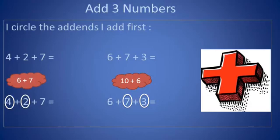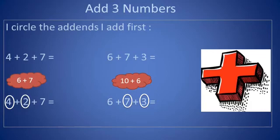I circle the addends I add first. Look at these examples. The first one is 4 plus 2 plus 7. I'll make a circle around 4 and 2 and add them together. The other one is 6 plus 7 plus 3. I'll make a circle around 7 and 3 because I want to add them together first.